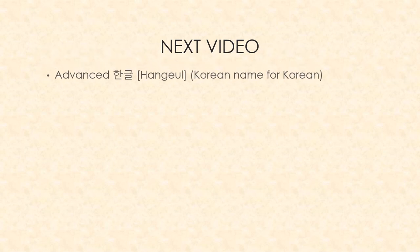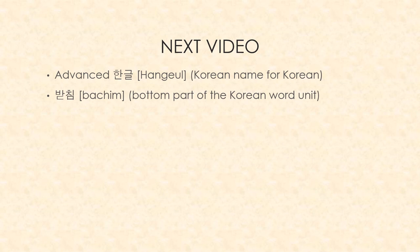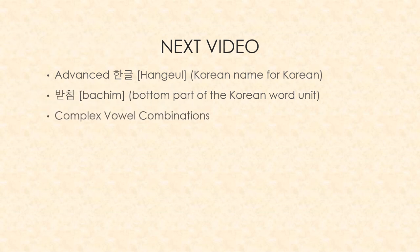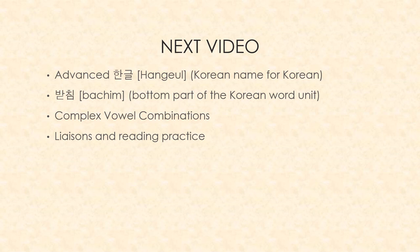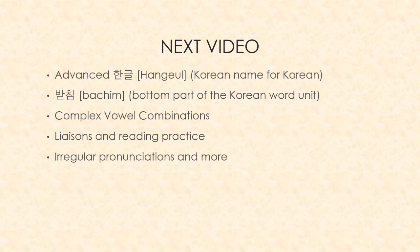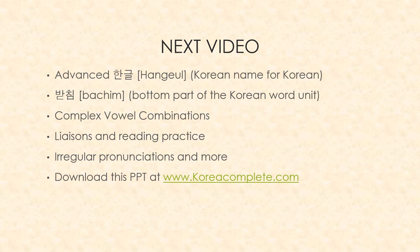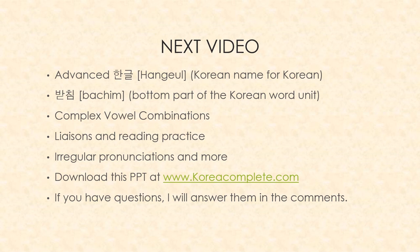In the next video we're going to talk about harder subjects — so study this video first. We'll cover the bachim, which is the bottom part of the Korean word unit that can change pronunciation depending on letter position. We'll also cover complex vowel combinations — you can combine vowels together, for instance making new sounds — as well as liaisons, reading practice, and irregular pronunciations. You can download this content at koreacomplete.com. Please like and subscribe. Thank you very much and I hope you look forward to the next video. Goodbye.